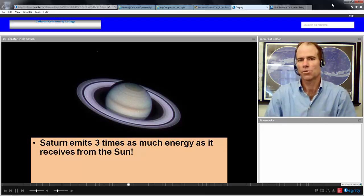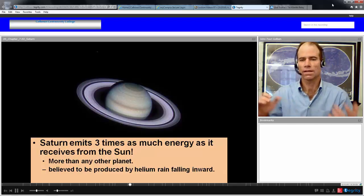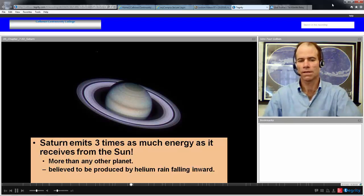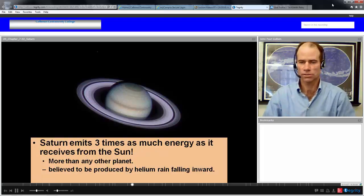Saturn emits three times as much energy as it receives from the Sun. This is believed to come from the helium rain condensing and releasing energy. This is more energy than any other planet, more of a factor of energy than any other planet—to release three times as much as you receive.